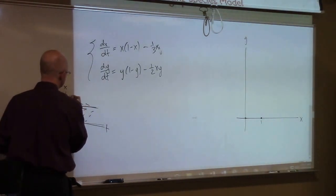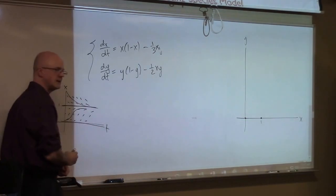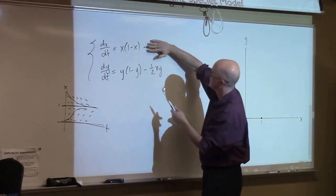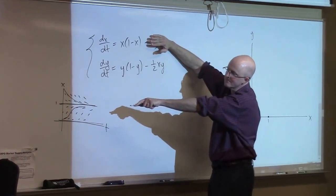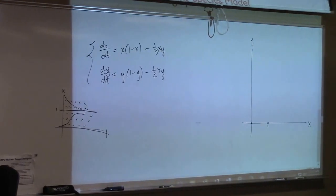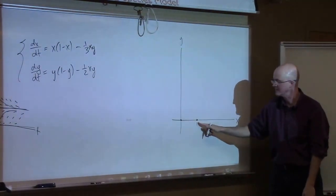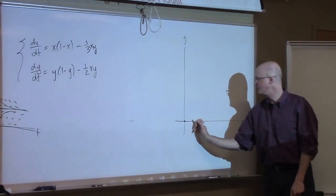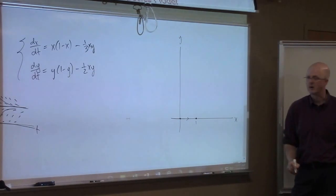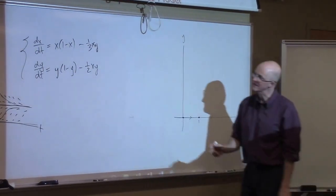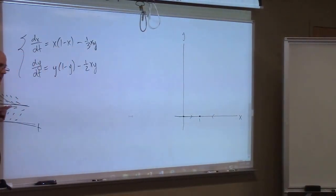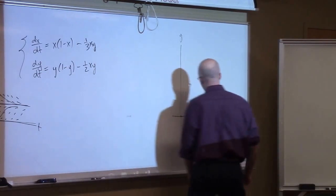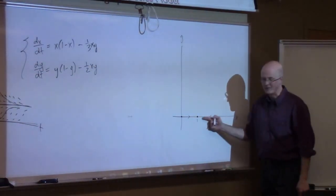Solutions above the carrying capacity decrease toward it. In the slope field for this equation, ignoring the interaction term, it would look like that. In the phase plane for the two-dimensional system, you're going to have equilibrium points at (0,0) and (1,0) along the x-axis where y is 0. Solutions increase toward 1 for initial conditions between 0 and 1, and decrease toward 1 for initial conditions bigger than 1 — going right or going left on this axis.